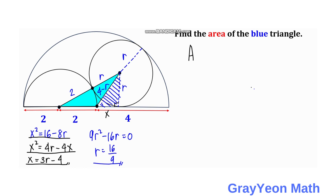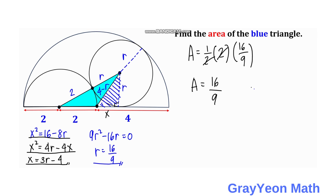For the area of the triangle: area equals one half times base times height. The base is 2 and the height is 16 over 9. Canceling the 2, the area equals 16 over 9 square units. That is our answer.